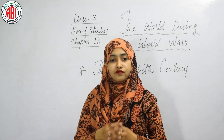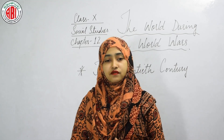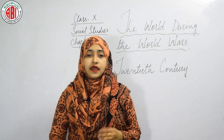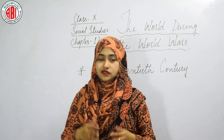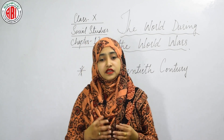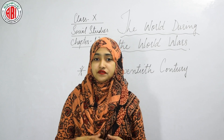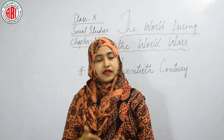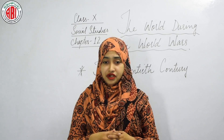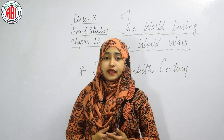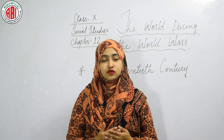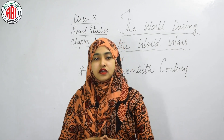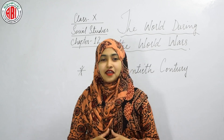After the First World War came the Treaty of Versailles in 1919, the League of Nations in 1920, and the Russian Socialist Revolution from 1917 to 1922. This was followed by the rise of Stalin, the impact of the Russian Revolution on the world, the Great Economic Depression from 1929 to 1939, and the rise of racism and Nazism.